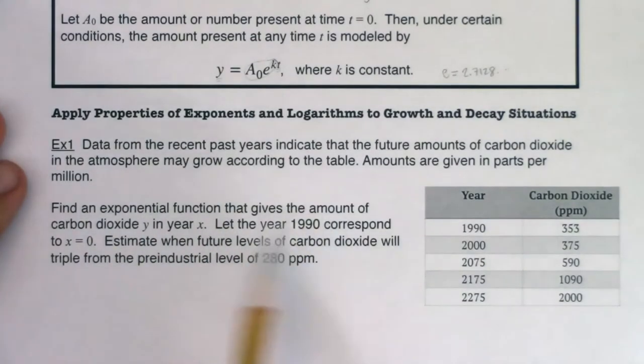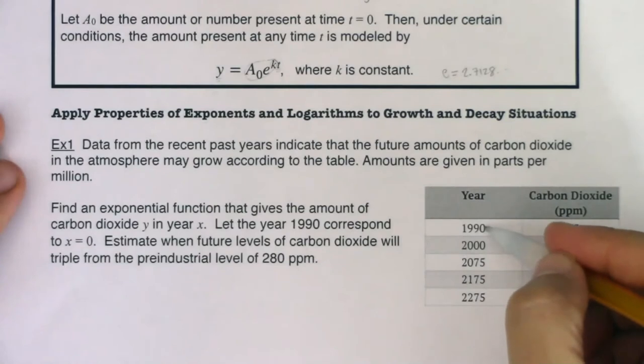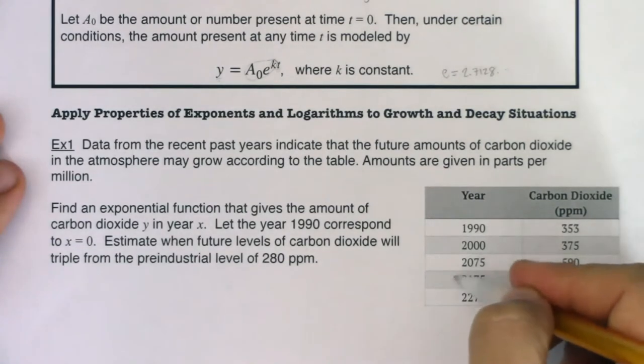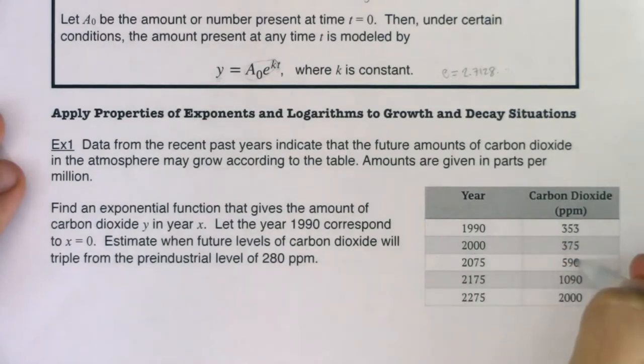Data from recent past years indicate that the future amounts of carbon dioxide in the atmosphere may grow according to the table. Amounts are given in parts per million. Find an exponential function that gives the amount of carbon dioxide y in year x. Let the year 1990 correspond to x equaling zero. Estimate when future levels of carbon dioxide will triple the pre-industrial level of 280 parts per million. These years haven't happened, at least as of this recording. I would be shocked if I was alive in the year 2075.